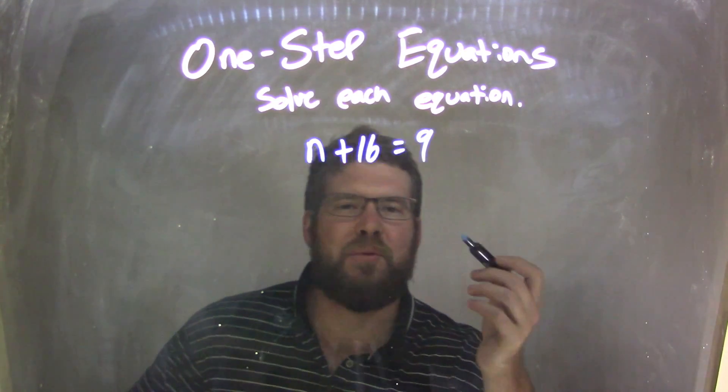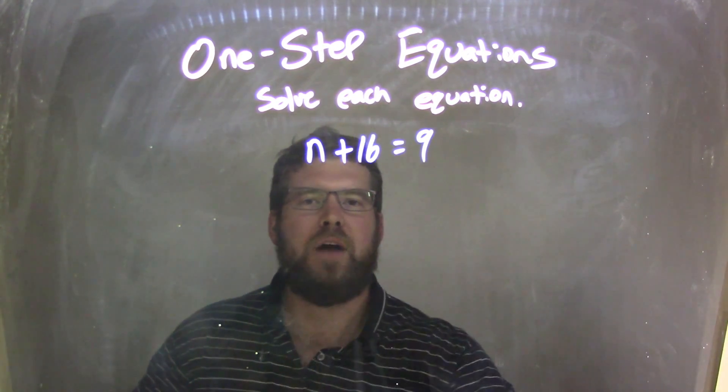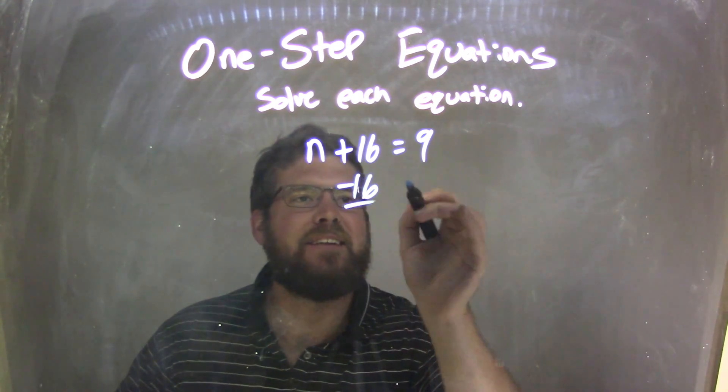Well, if I had n plus 16 equals 9, my first thing I'm thinking about is, hey, that's addition. What's the opposite of that? That's subtraction. So I'm going to subtract 16 from both sides.